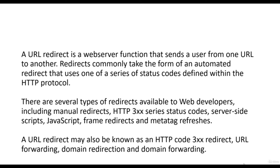There are several types of redirects available to web developers, including manual redirects and the HTTP 3xx series status codes. This is very important. We'll also look at 301, 302, and 303 series status codes to see if URL redirection is possible in a particular parameter, because we are in the boundary of XSS. First of all, we will see how that parameter is vulnerable or not.